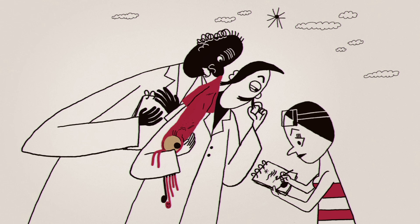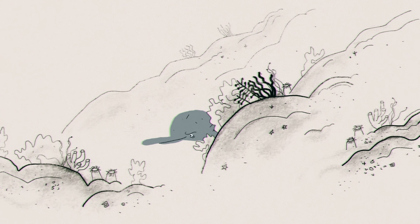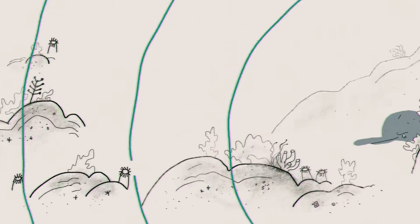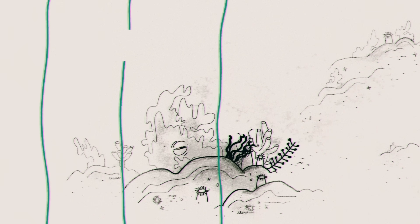Some predators, however, like whales and dolphins, get around this ruse by using sound waves to detect a squid's camouflaged form.